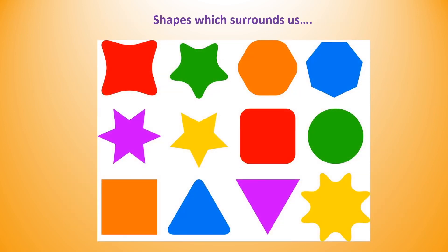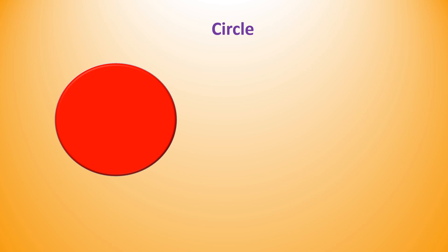Finding shapes in our surrounding objects is very interesting. Let's learn them. Circle is very common and very simple 2D shape. It has one curved face and doesn't have any side. Similarly, there are no vertices or angles in the circle.